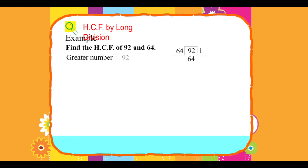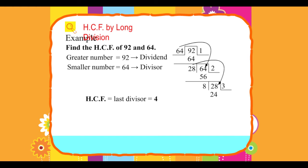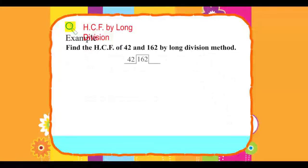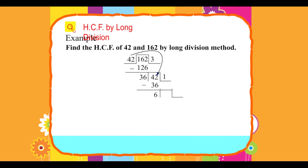Greater number 92, dividend. Smaller number 64, divisor. HCF equals last divisor equals 4. Find the HCF of 42 and 162 by long division method. HCF last divisor equals 6.